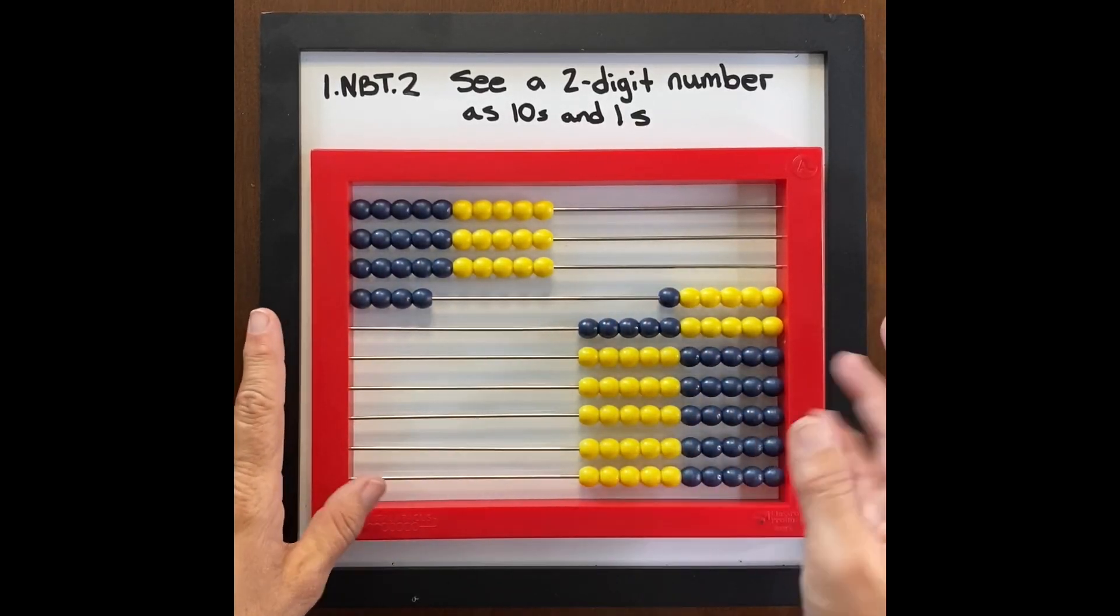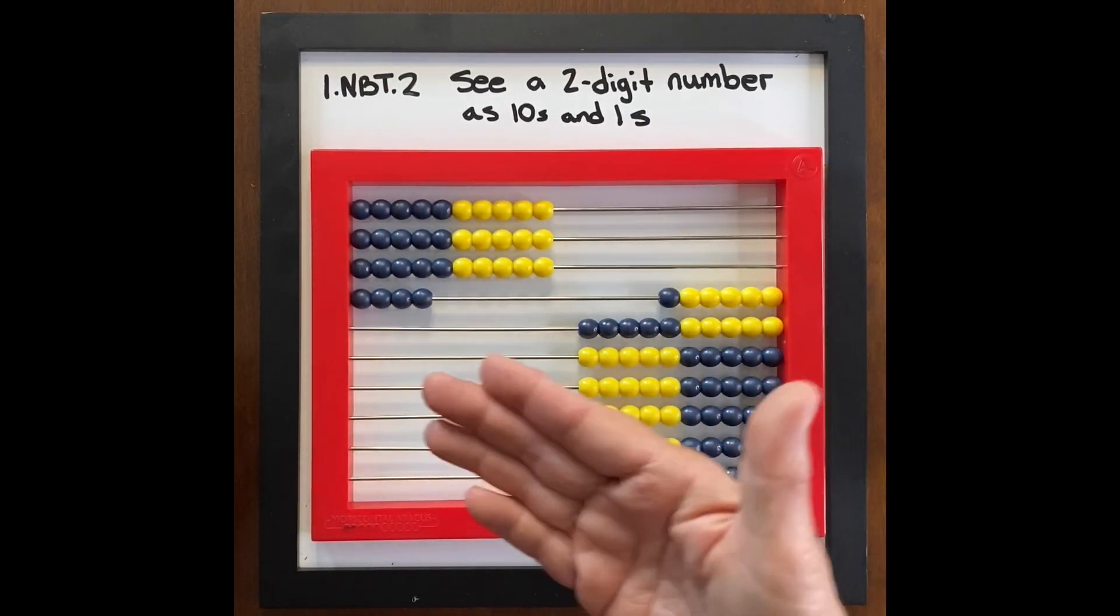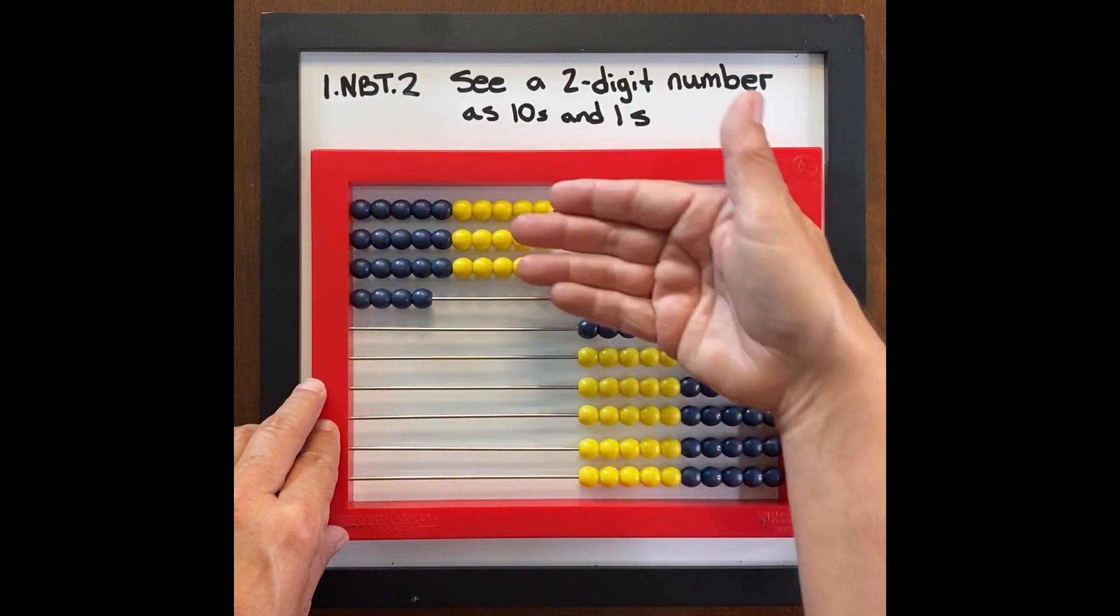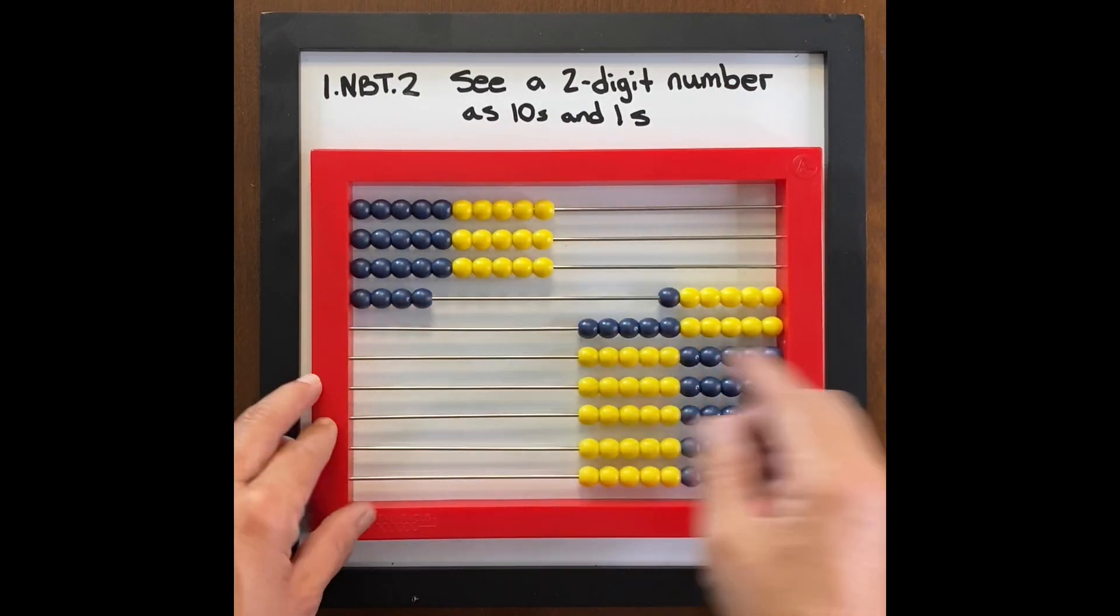To grow this concept, you can just have numbers on your abacus. What is my number? Three tens, four ones, 34.